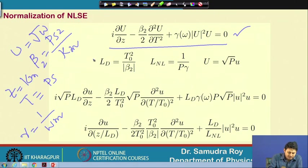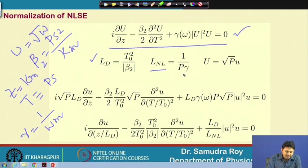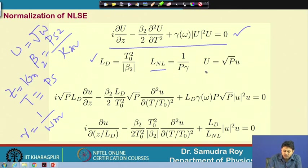We introduce L_D = T₀²/|β₂|, called the dispersion length. We also introduce the nonlinear length L_NL = 1/(Pγ), where γ has units of 1/(W·m) and P has units of W, so 1/(Pγ) has units of meters — a length unit. We write U = √P · u, where the small u is dimensionless.